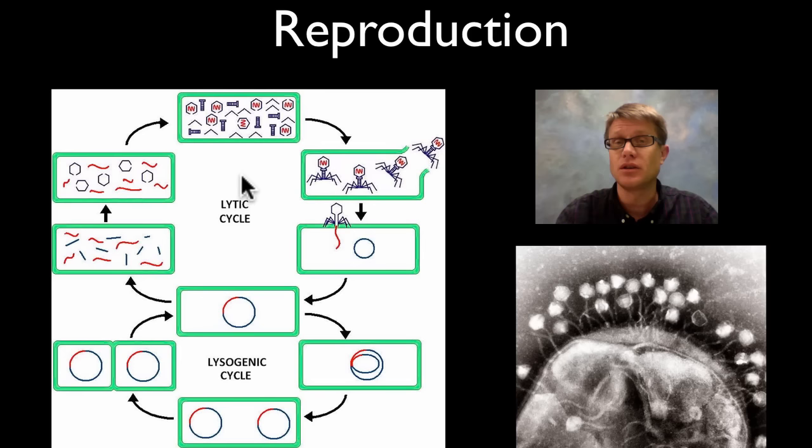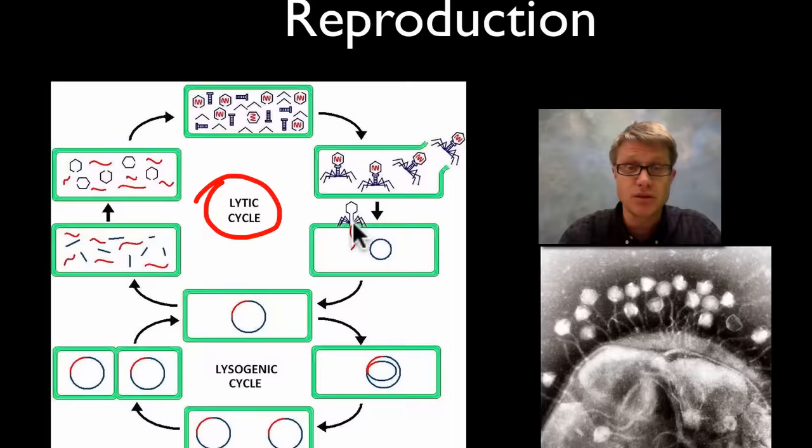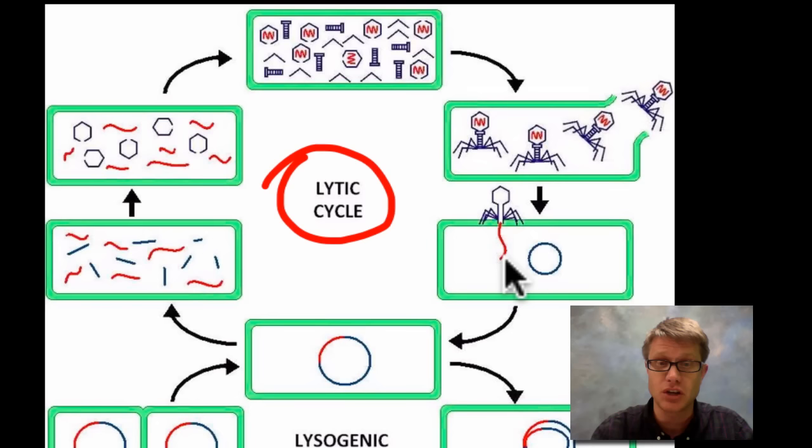So how do they reproduce? How does this actually work? Well, the viral life cycle is two parts. There's the lytic cycle. Lytic comes from the word lyse or to break. So let's kind of look right here at a bacteriophage. A bacteriophage, remember, infects bacteria. And so what this one is doing is injecting its genetic material, in this case DNA, into a bacteria. So it injected its DNA into a bacteria.